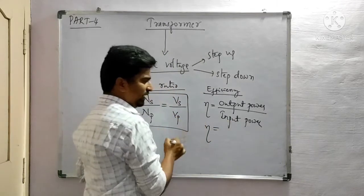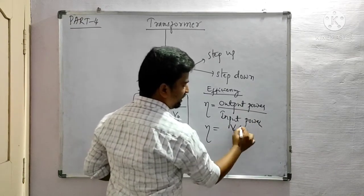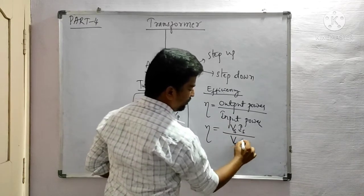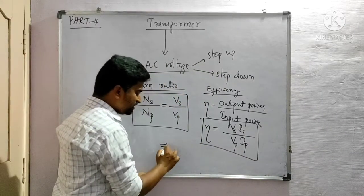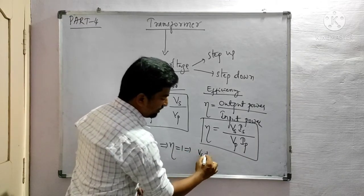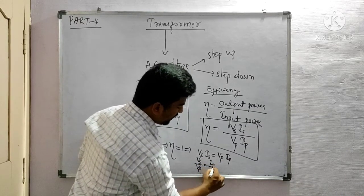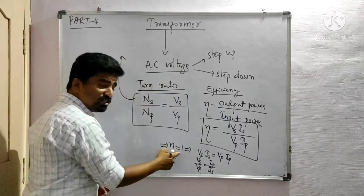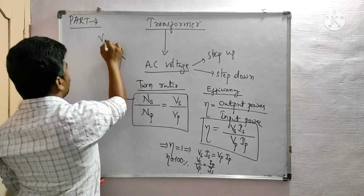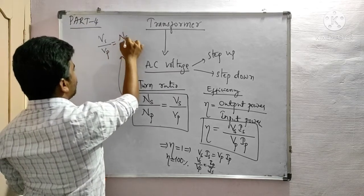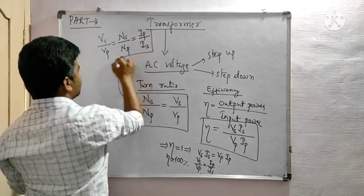The input is the primary and the output is the secondary. Output power is Vs times Is, and input power is Vp times Ip. So efficiency equals (Vs × Is) / (Vp × Ip). When efficiency is equal to 1 — meaning 100% — it implies Vs × Is = Vp × Ip, so Vs/Vp = Ip/Is. Therefore, the turn ratio formula gives: voltage across secondary equals voltage across primary times (Ns/Np), and current across primary divided by current across secondary equals Ns/Np. This is a very important relation.